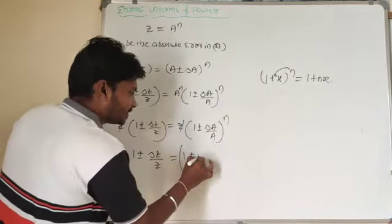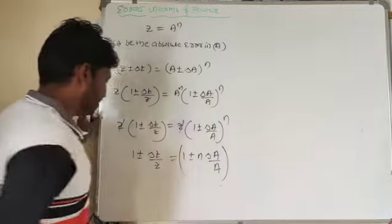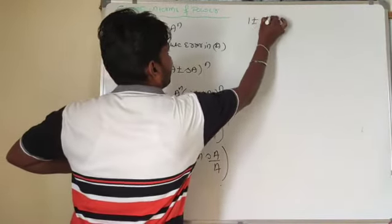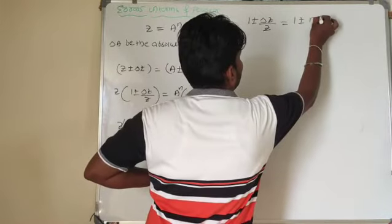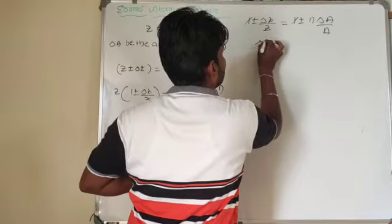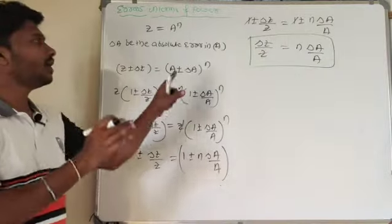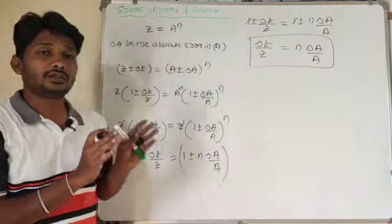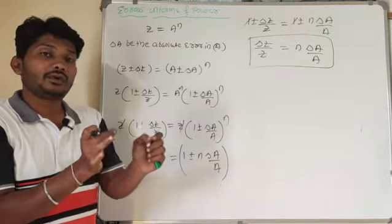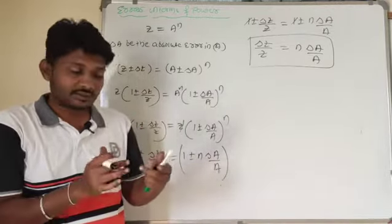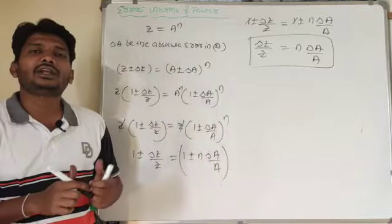With n as the power, the expansion gives 1 plus or minus delta of z by z equals 1 plus or minus n into delta of a by a. The 1 terms cancel, so the final result is: delta of z by z is equal to n into delta of a by a. This is all about errors in terms of power. So we have covered errors in addition, subtraction, multiplication, division, and power. In the next class we will focus on numericals related to combination of errors.